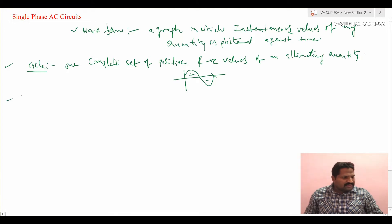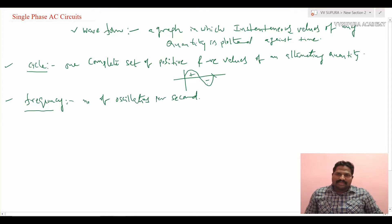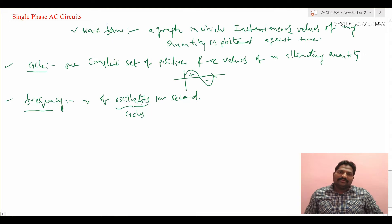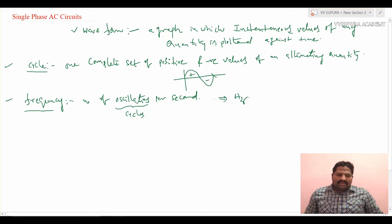The third term is frequency. The definition of frequency is the number of oscillations — or number of cycles — per second. It is measured in hertz. In India, we follow a constant frequency of 50 hertz for every equipment or electrical supply.